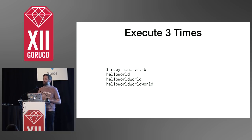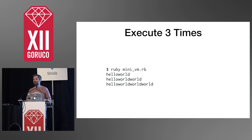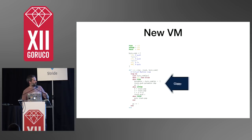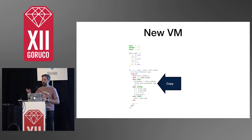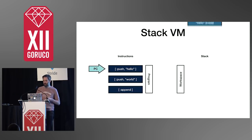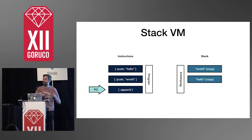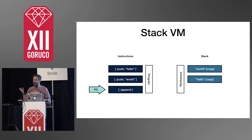How do we deal with this problem? We have to actually dupe the objects before we push them onto the stack. We add a line that calls dup on that string. So when we execute this program again, it'll push copies onto the stack. This is exactly how the virtual machine works today — if you look up the push object instruction in the VM, you'll see that it has to do this duplication before pushing onto the stack.